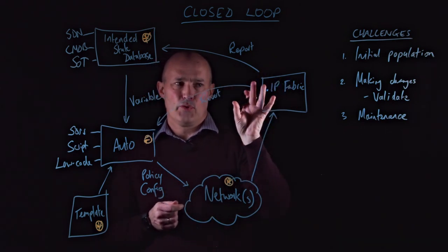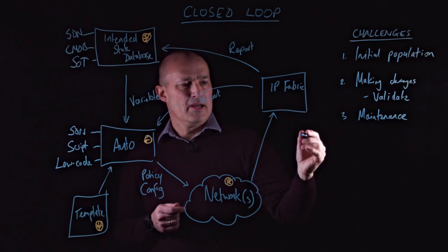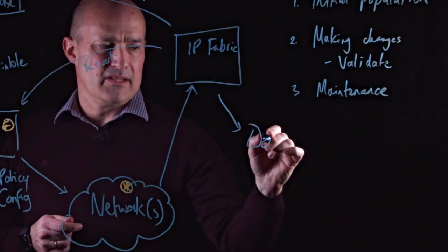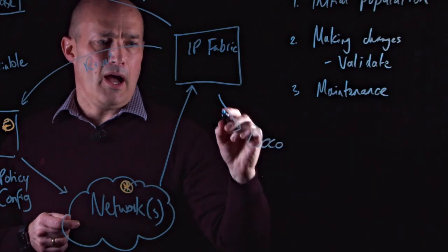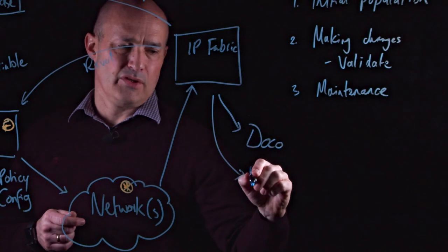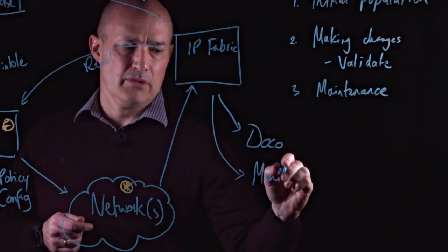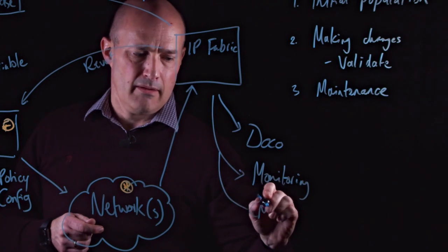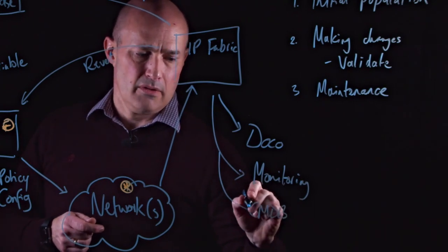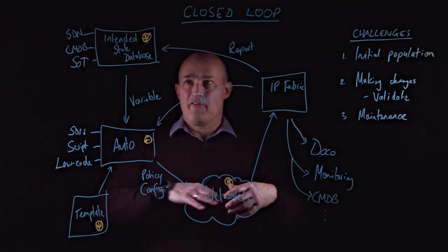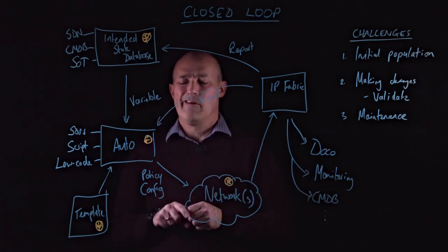Now, the other side effects, of course, of having IP Fabric in the network means that you've got extra benefits of automated documentation. You're able also to push that data into other platforms, your monitoring, for example, your CMDB, and so on.